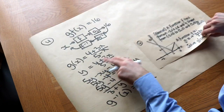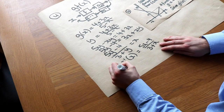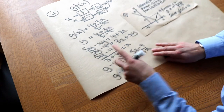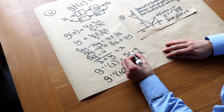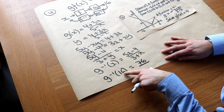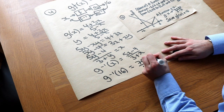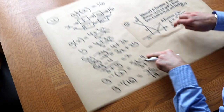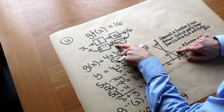Specifically we want g⁻¹(16). Substituting 16 in for x: numerator is 5 × 16 − 4 = 80 − 4 = 76; denominator is 3 + 16 = 19. So g⁻¹(16) = 76 / 19 = 4. We've fed 16 through g⁻¹ and arrived at 4.